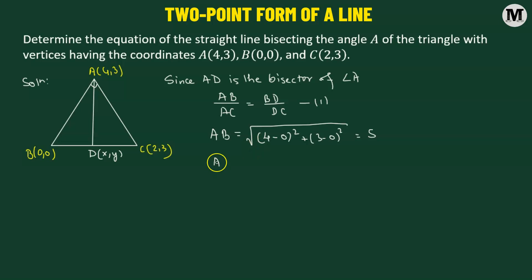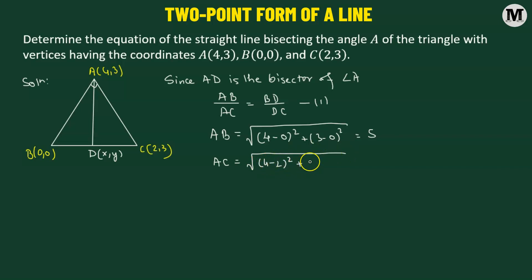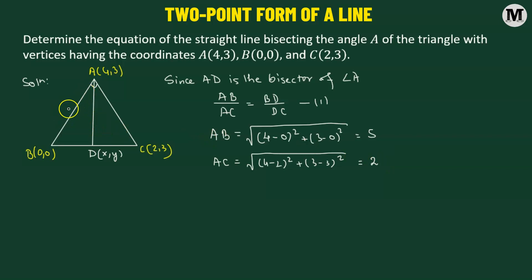Then we can also find out the length AC. So AC is going to be the square root of the difference of the X coordinates — 4 minus 2 squared — added to the difference of the Y coordinates — 3 minus 3 squared. This gives us a value of 2. So the length of side AB is 5 units and the length of side AC is 2 units.